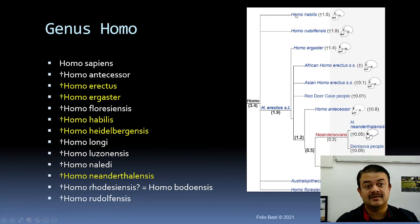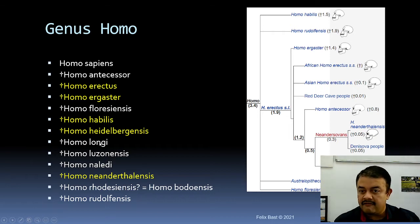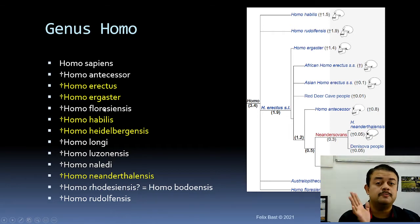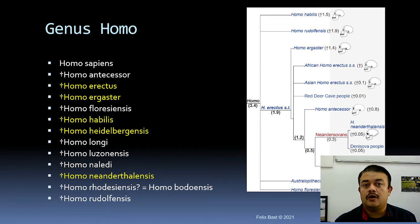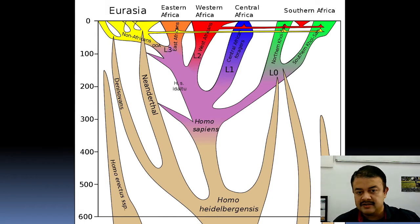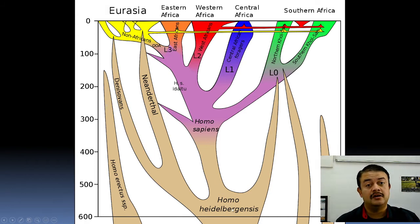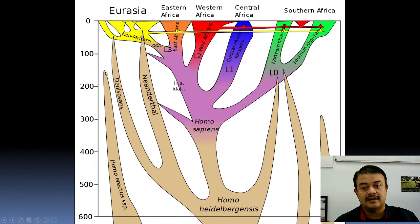This is how the phylogenetic tree looks. We also have Homo antecessor and Homo floresiensis — these are not species-rich; only very few individuals, sometimes just one, have been found for species like Longhi, Homo bodensis, or Homo rudolfensis. Homo sapiens may have descended from Homo heidelbergensis. All other Homo lineages have gone extinct — their lineages stop before reaching the present day, which is represented as zero on the timeline. The spatial distribution shows most lineages in Eurasia and across Eastern, Western, Central, and Southern Africa.